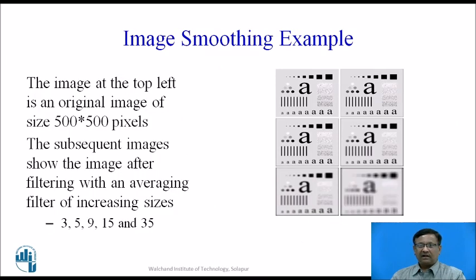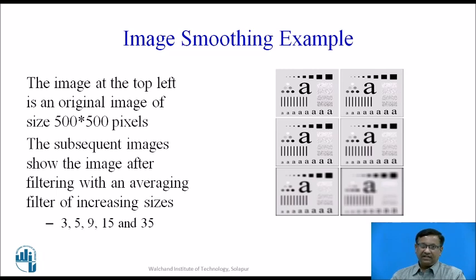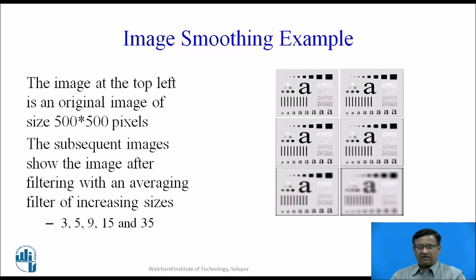In the image smoothing example shown on the right side, the top-left figure is the original image of size 500x500 pixels. The subsequent images show the result after filtering with an averaging filter of increasing sizes: 3x3, 5x5, 9x9, 15x15, and 35x35. As the filter mask size increases, we get a blurring operation and the image becomes too smoothed. So we should take care of the filter mask size. If the original image has more noise, we can use higher filter mask sizes; otherwise, 3x3 will work.